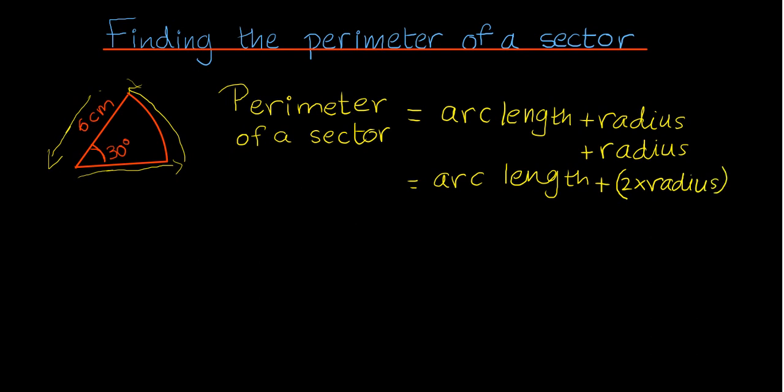Anyway, let's find the arc length first. In order to do this, we know that the formula for the arc length is theta, which is the angle over there, over 360 times 2πr, as in the previous videos.